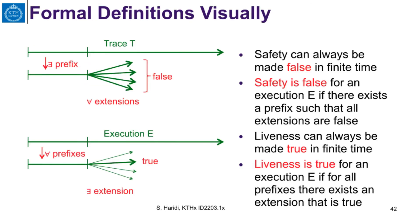Here is a picture that illustrates safety and liveness. Safety can always be made false after a finite time — when a bad event happens, safety is false — for any execution if there exists a prefix such that all extensions of that prefix do not satisfy the property. Liveness, on the other hand, can always be made true in finite time when the good event happens. Liveness is true if for any prefix there exists at least one extension where we can satisfy our property.